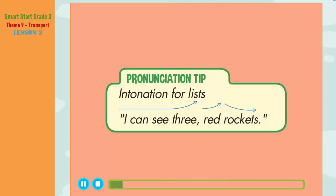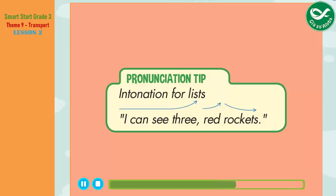I can see one yellow tractor. I can see three red rockets. Now listen again and say. I can see three red rockets. What can I see? I can see three red rockets.